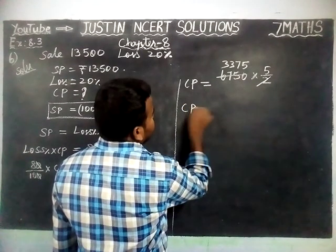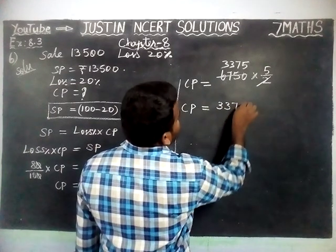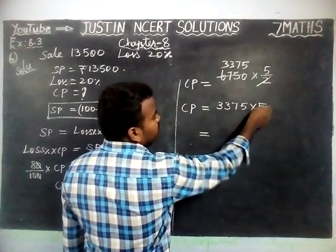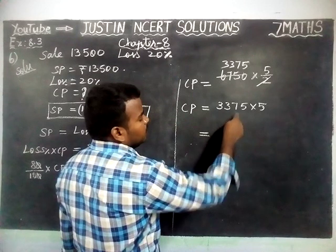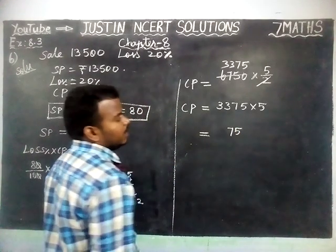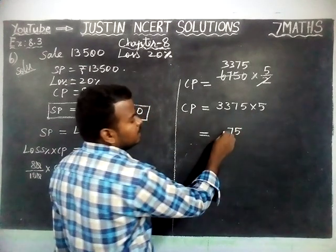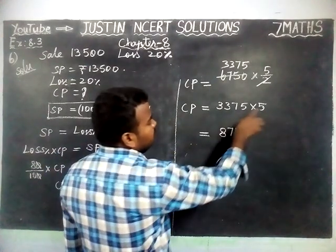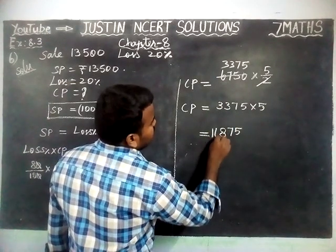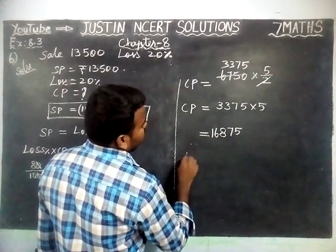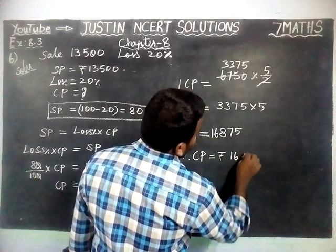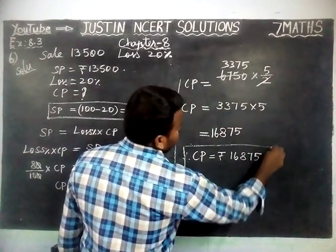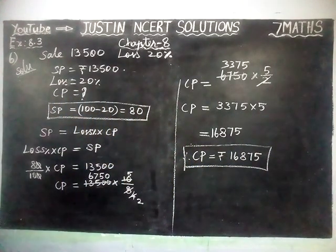So cost price CP is equal to 3375 into 5. That equals: 5 fives are 25, remaining 2; 5 sevens are 35, 35 plus 2 is 37, remaining 3; 3 fives are 15, 15 plus 3 is 18, remaining 1; 5 threes are 15, 15 plus 1 is 16. Therefore, cost price is equal to Rs. 16,875. That's all students — kindly give your suggestions in the comments box, share this video with your friends and subscribe to our channel. Thank you.